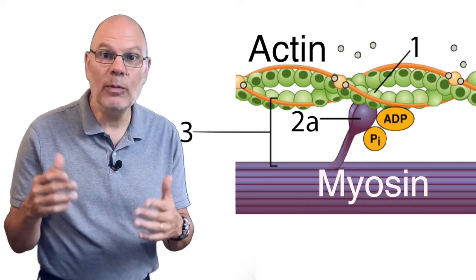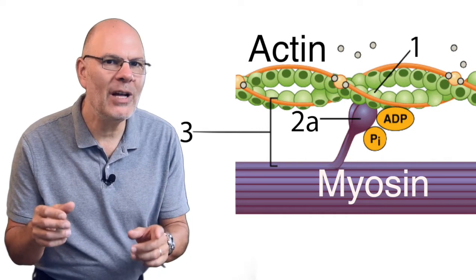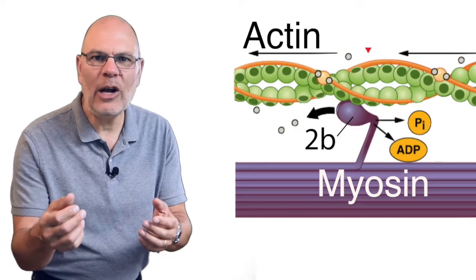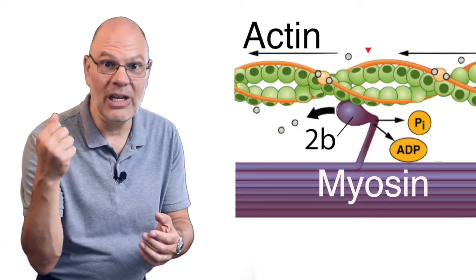Myosin is like a powered molecular hook. It can reach out, grab onto actin, and pull. That causes the muscle fiber to shorten and contract.